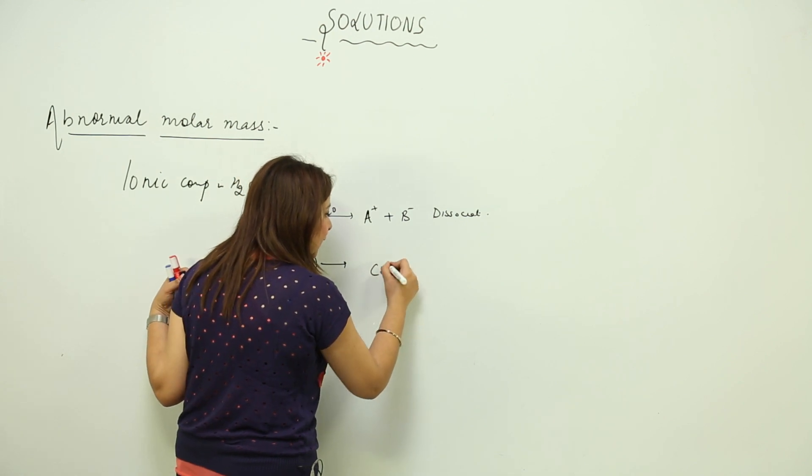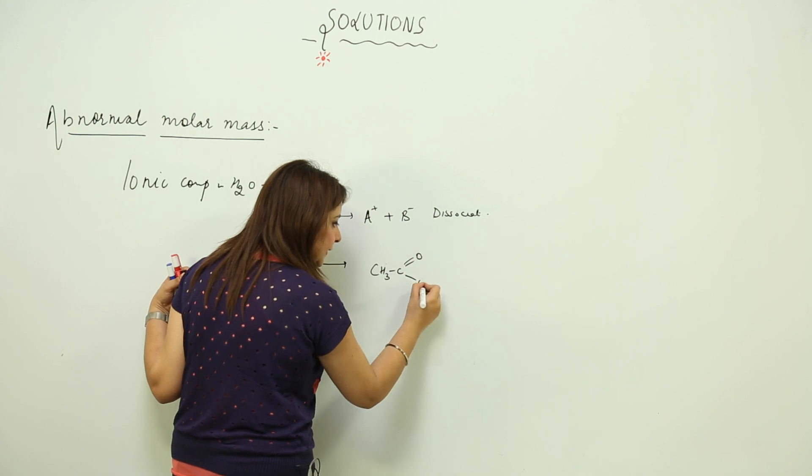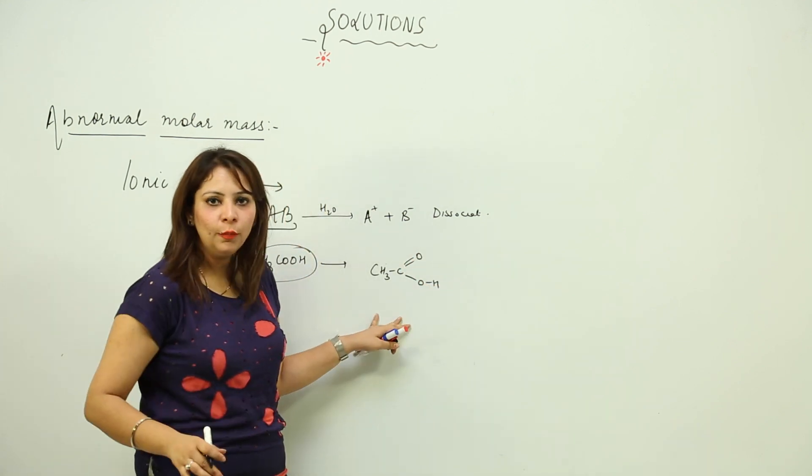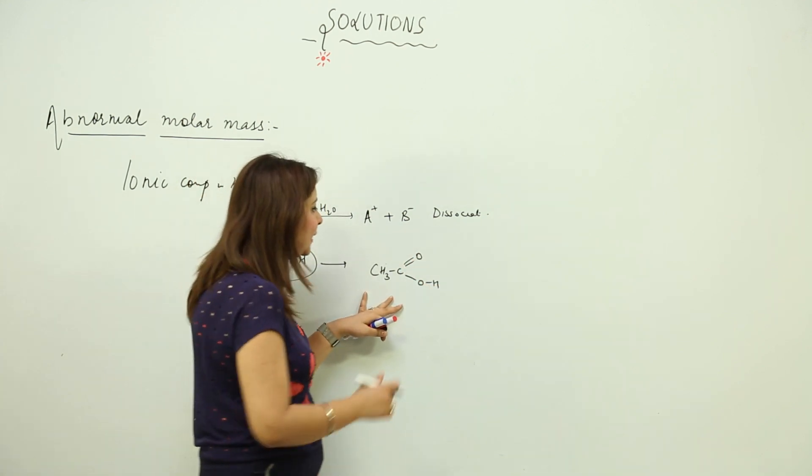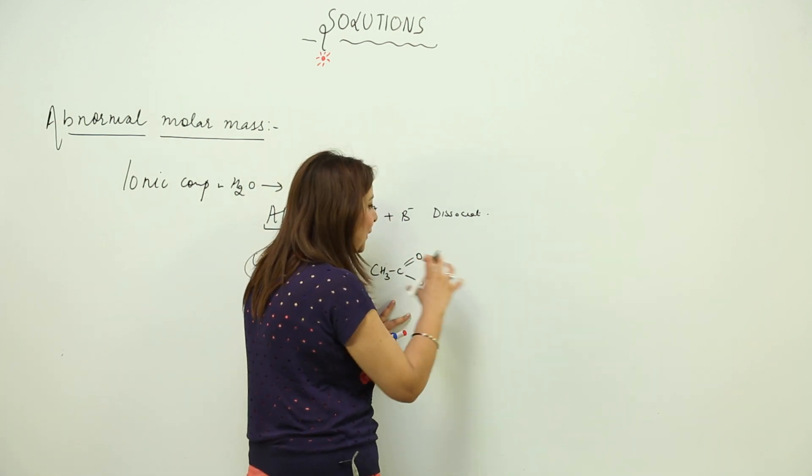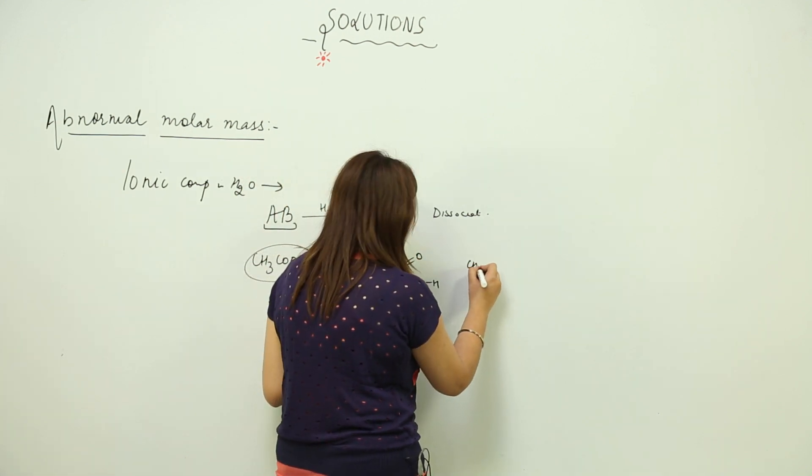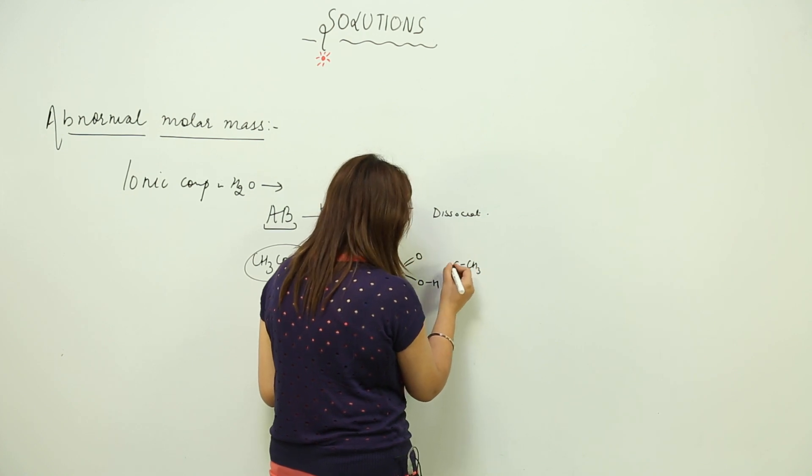When they mix ethanoic acid with ethanoic acid, what we get to see is that they actually get bonded to each other. This is the formula for acetic acid. So when it is mixed with its own molecules, it gets bonded to them.